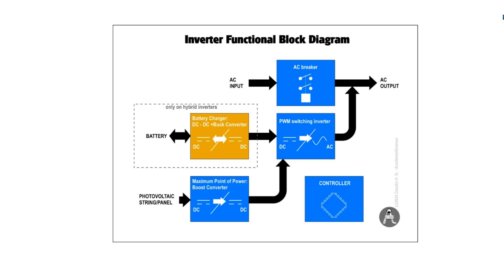And then we have the core part of the inverter which is the PWM switching inverter that converts from DC which comes from the photovoltaic strings or panels and then it converts the DC voltage into AC sinusoidal voltage.